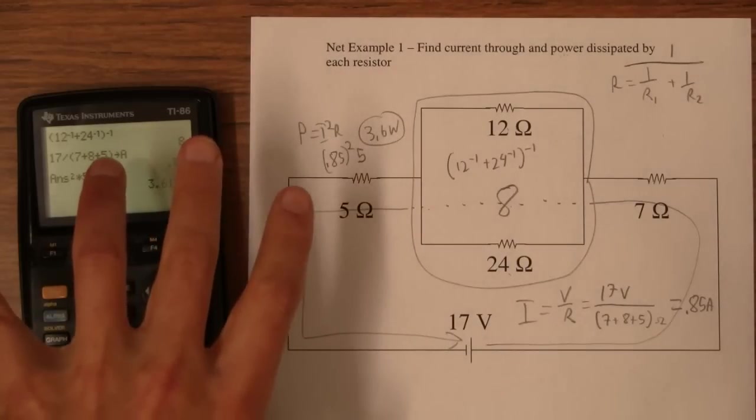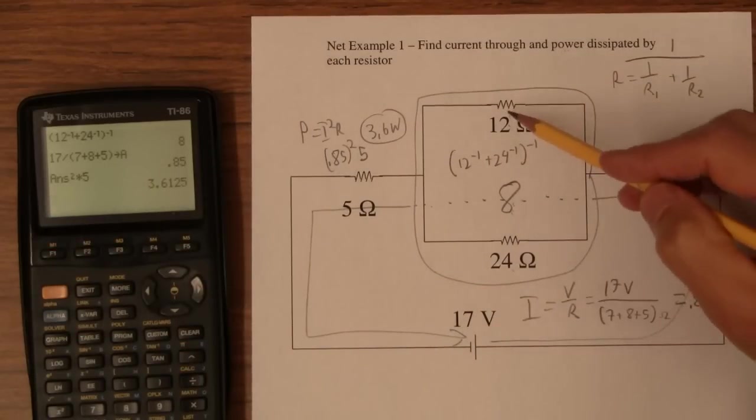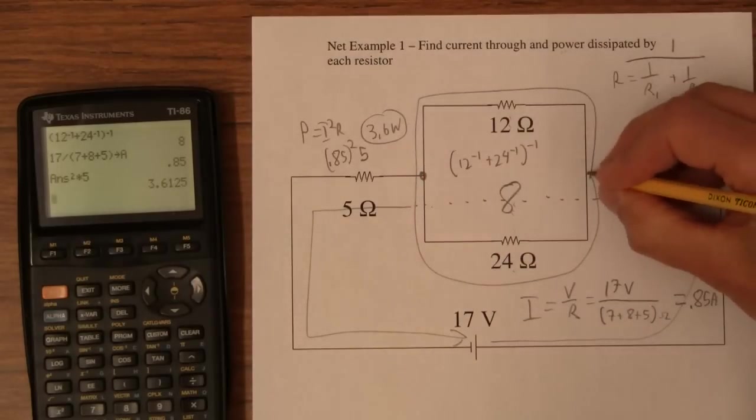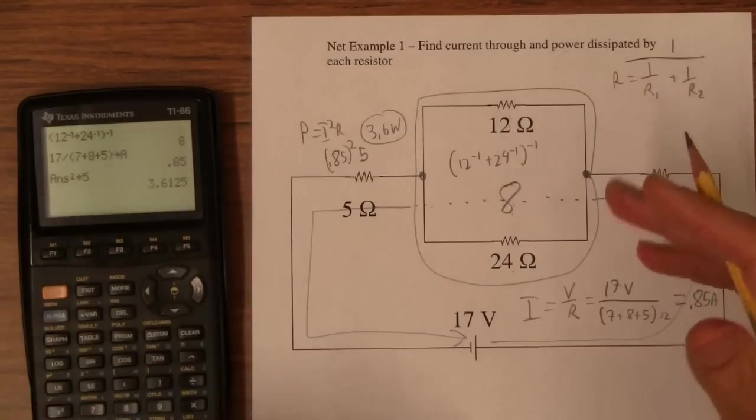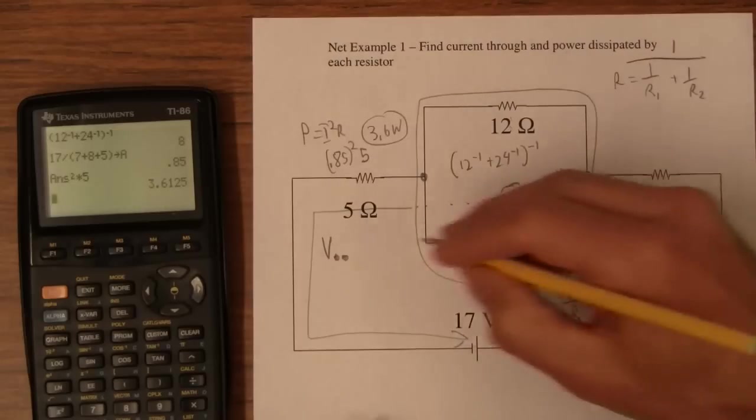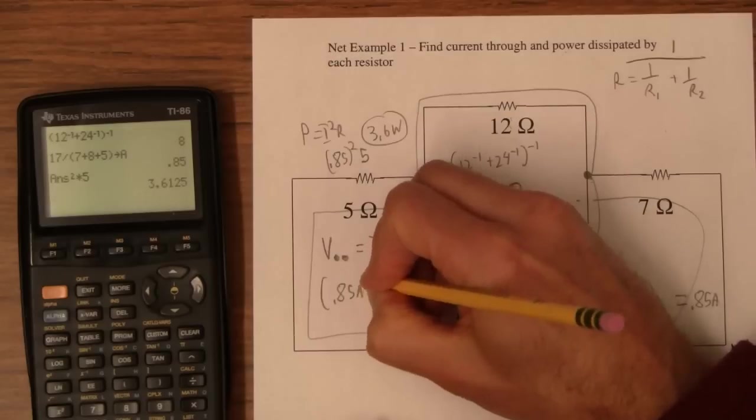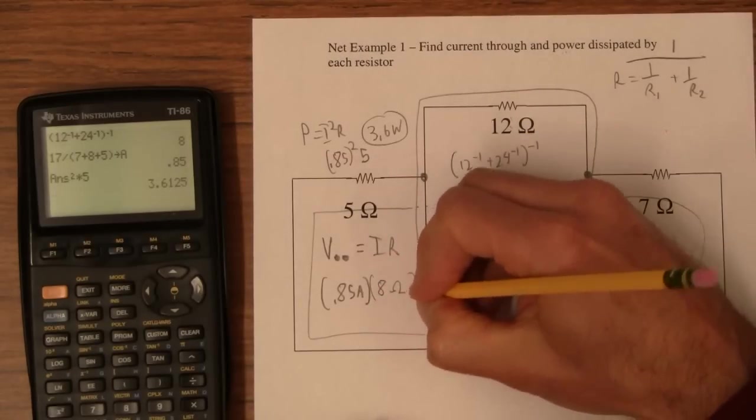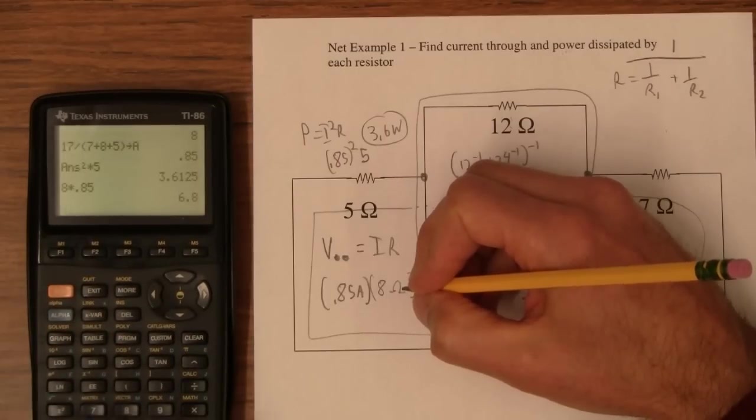Now, this is the key step. What I have to do, this 8 ohm resistor is not an 8 ohm resistor. It's really a 12 and a 24. If I want to find the current through these guys, what I have to do is I have to find the voltage from here to here. I'm going to have to find the voltage across the reduced circuit. To do that, I'm going to do V equals IR. So the voltage point to point from that point to that point is IR. That's going to be 0.85 amps times the 8 ohms that that is all together. So 8 times 0.85 is 6.8 volts.